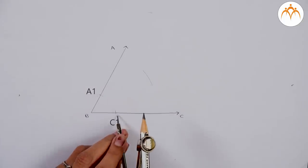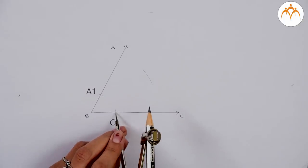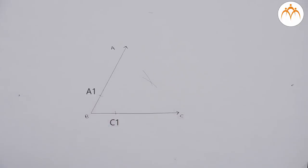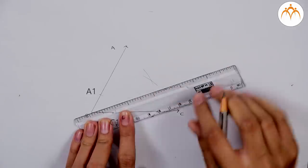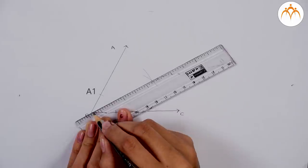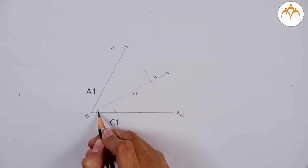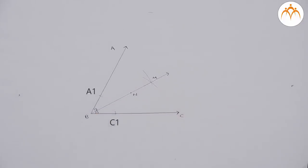Keeping the distance the same from point A1, draw an arc in the interior of angle ABC. Now draw one more arc from point C1 in the interior of angle ABC that cuts the earlier arc, keeping the distance the same using the compass. The point of intersection of these two arcs is named M. Finally, draw a ray BM from point B that passes through point M.